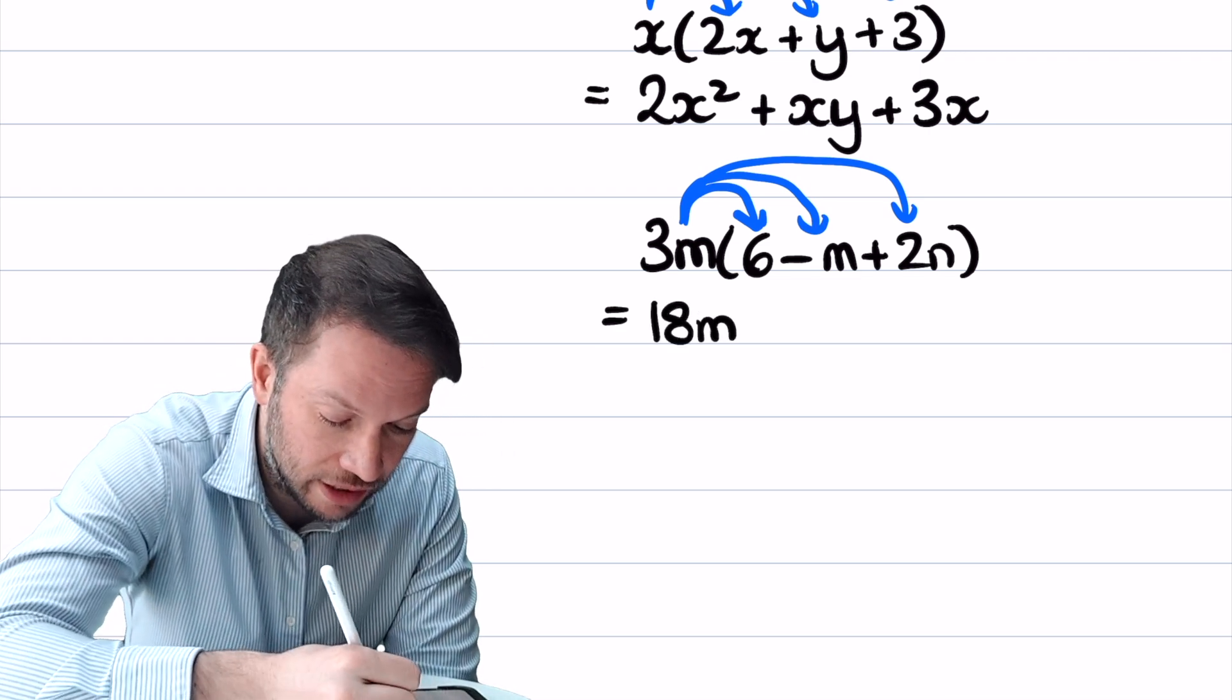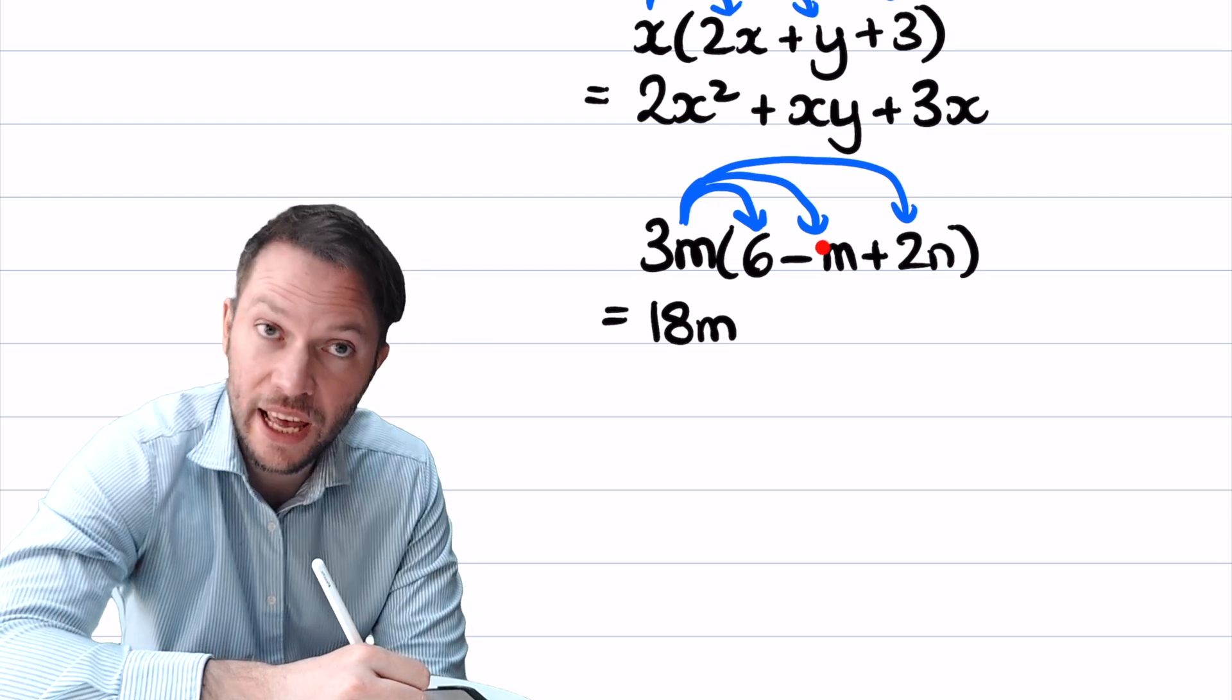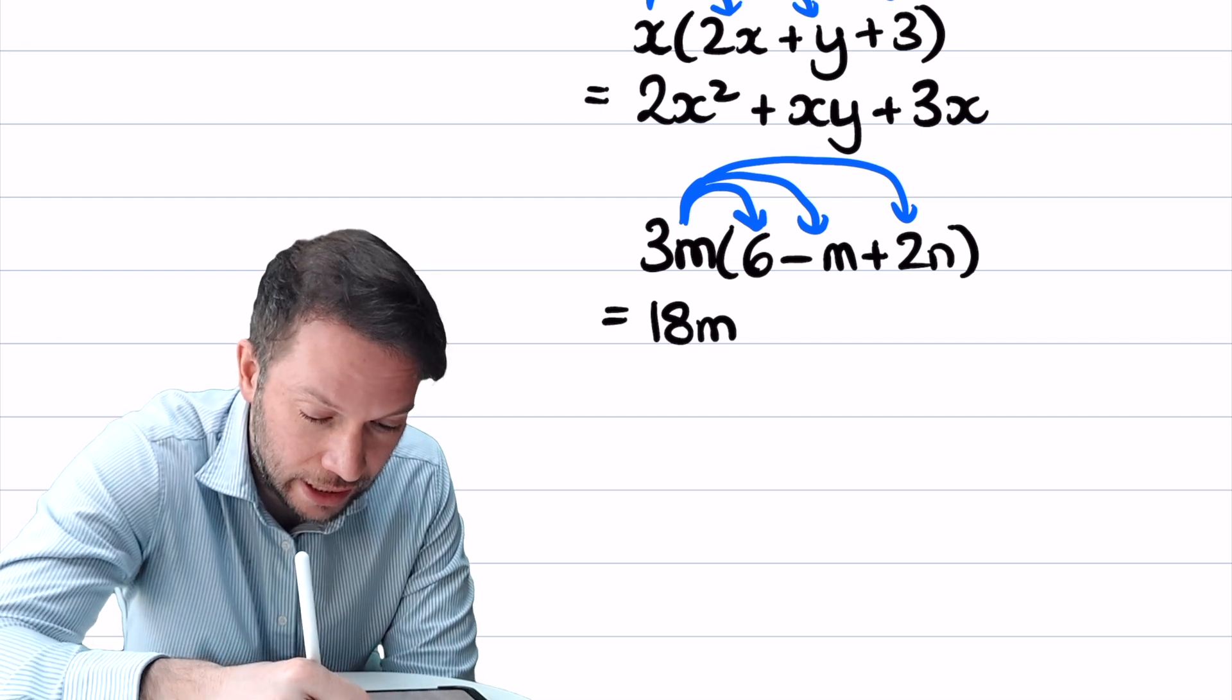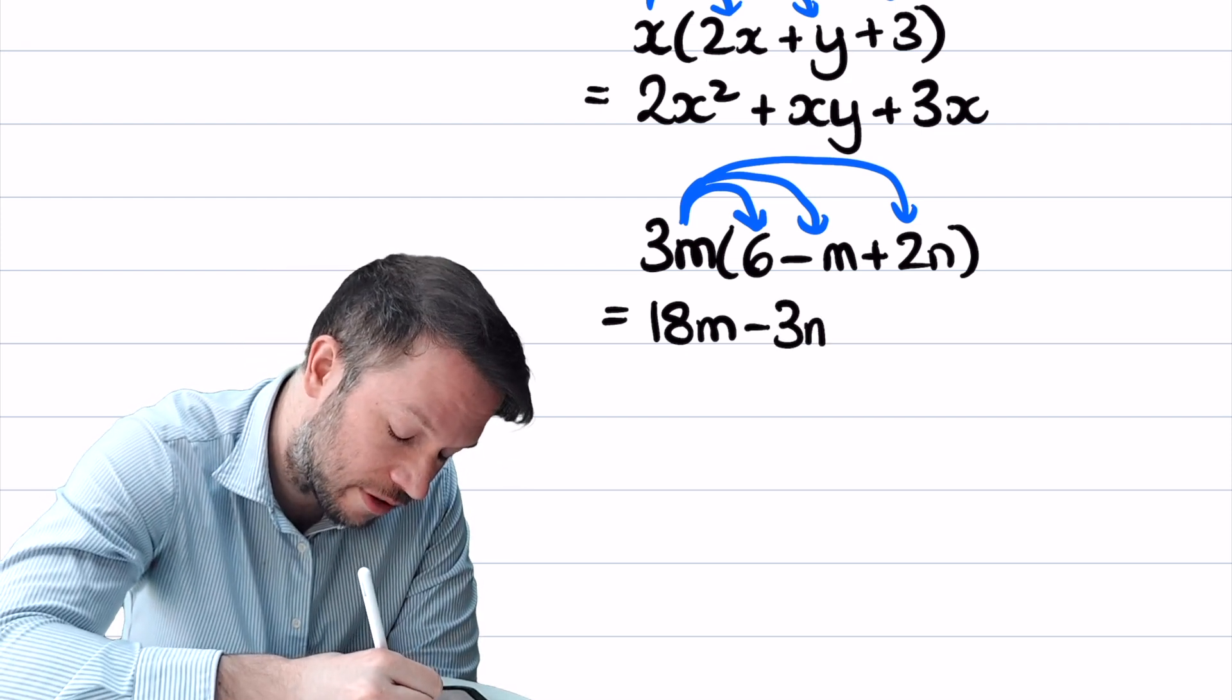The 3m times by the minus m, well the m times m is m squared, and because it's positive times negative it's going to be negative, and you've got this 3 here, so that's going to be minus 3m squared.